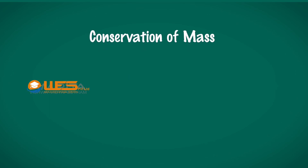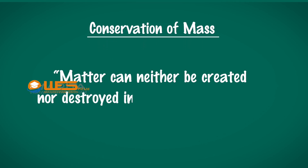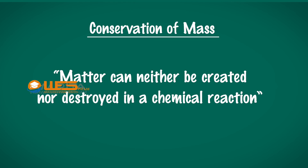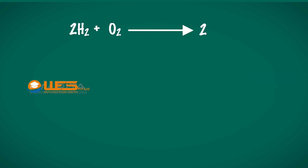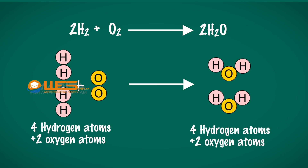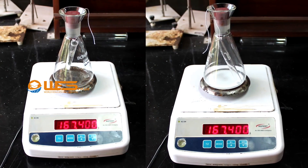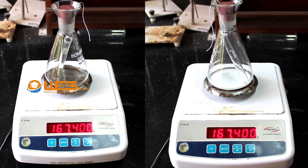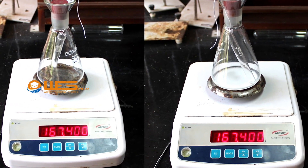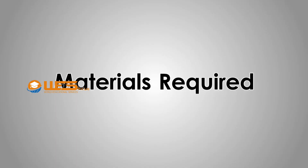He proposed a law known as the Law of Conservation of Mass. The law says that matter can neither be created nor destroyed in a chemical reaction. It also tells us that the number of atoms after a chemical reaction will always be the same as the number before the reaction. Our aim here is to verify the Law of Conservation of Mass during a chemical reaction.